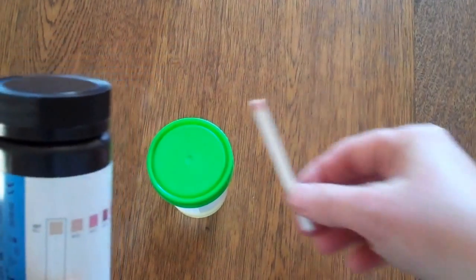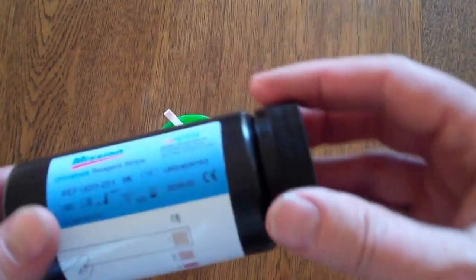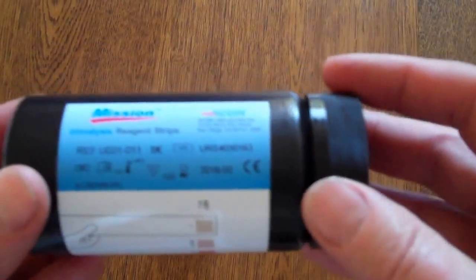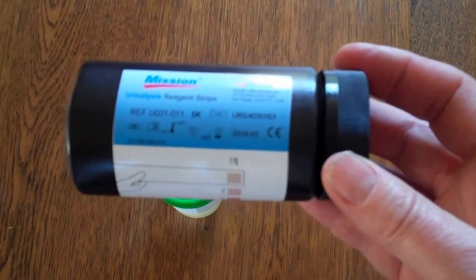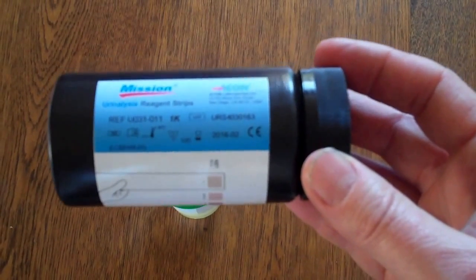Now once these test kits have been opened, even if they have a long expiry date on the pot, the manufacturer's guidelines is that they should be used within three months.